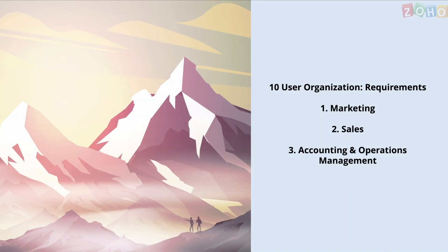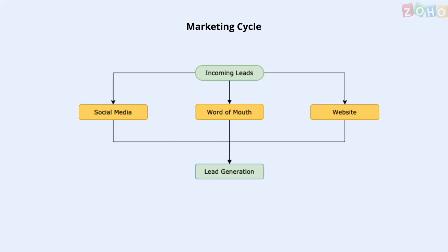Before we get into it, here's a little bit of background. The travel agency has a team of 10 employees managing marketing, sales, accounting, and operations. Their business cycle starts with marketing, where the agency generates leads from various sources like social media, their website, and different types of referrals.